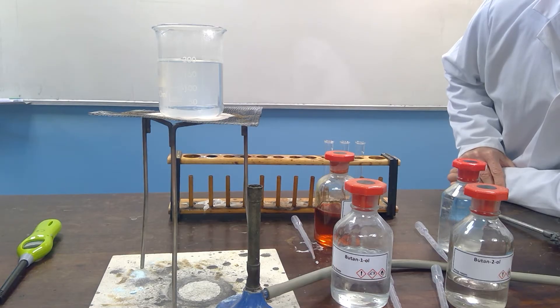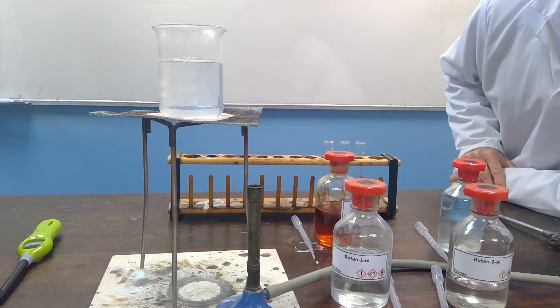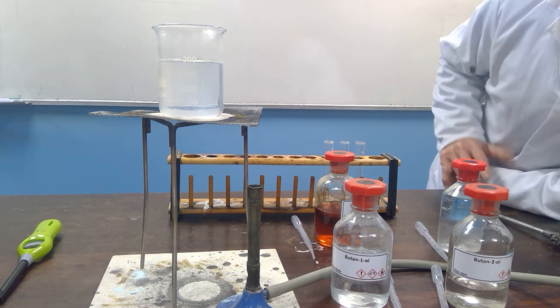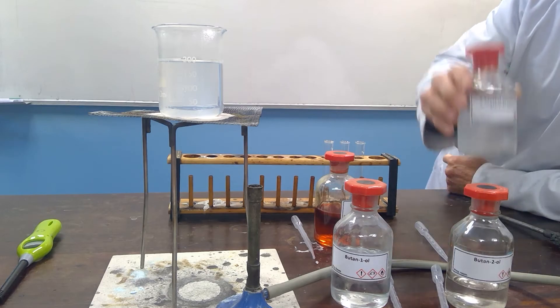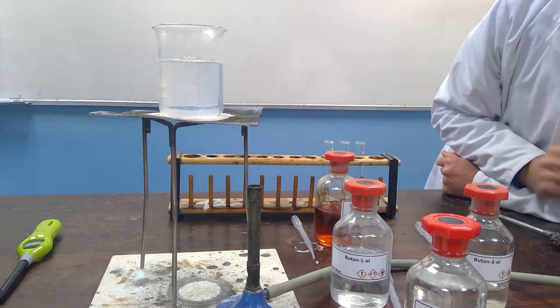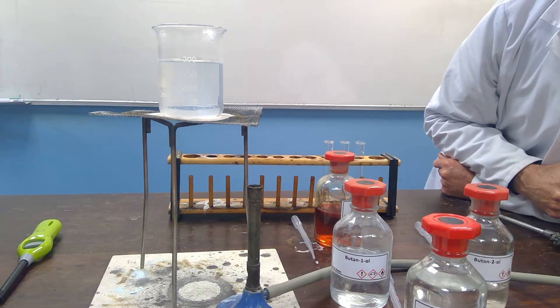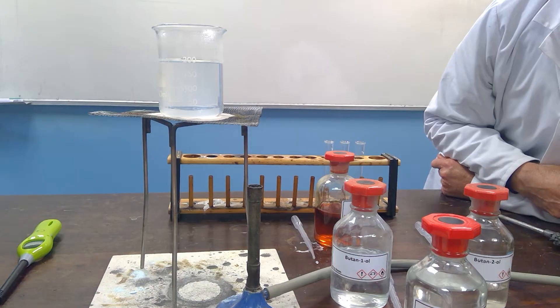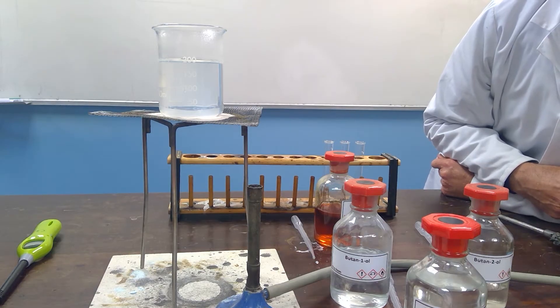For the purposes of this video we will simply use the three alcohols butan-1-ol, butan-2-ol and 2-methyl propan-2-ol. The butan-1-ol is a primary alcohol, the butan-2-ol is a secondary alcohol and the 2-methyl propan-2-ol is a tertiary alcohol.